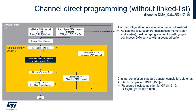This figure describes the direct programming of the GPDMA channel without link list. When GPDMA CXLLR equals 0, no link occurs. At the beginning, software initializes the channel by directly programming the channel-related registers, then software enables the channel. The DMA hardware checks the configuration, and if an error is detected, the USEF flag is set and the channel is automatically disabled.